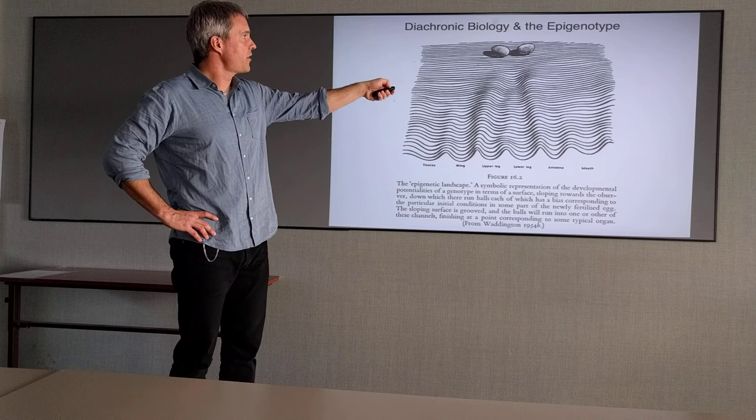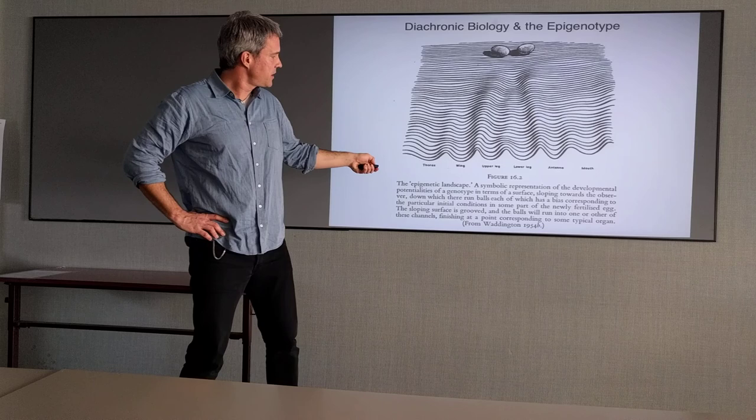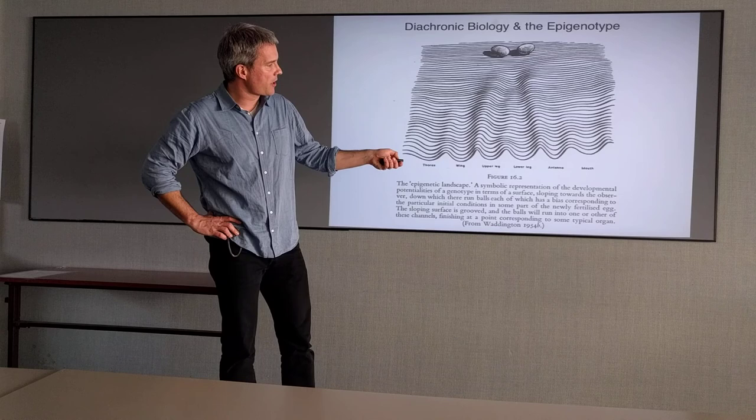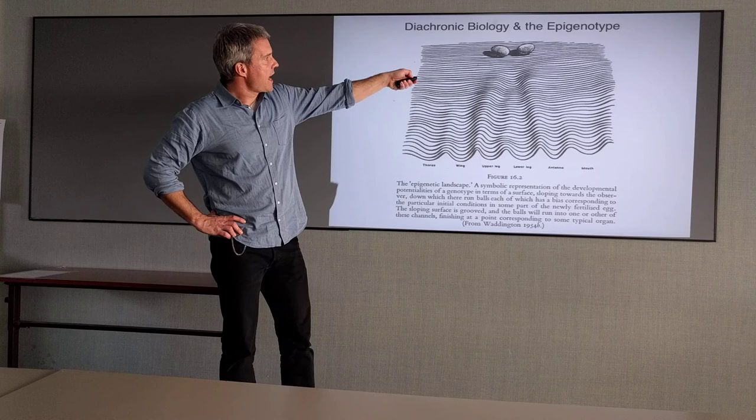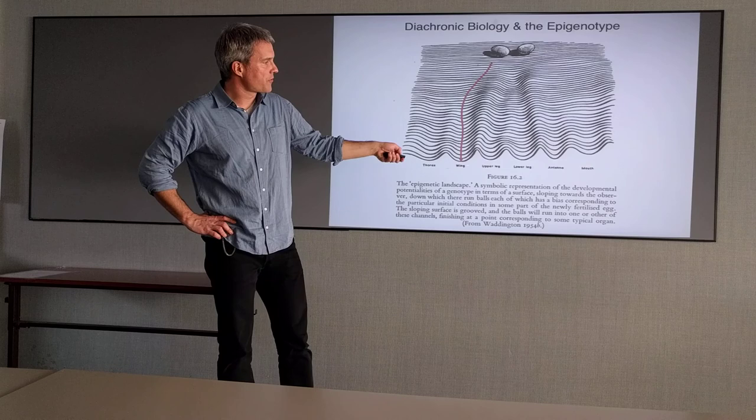You have an egg here, an undifferentiated egg, and you have several differentiated tissues here - wing, antenna, mouth, legs, wings. This applies to fly development, but it doesn't really matter. The egg develops and falls into one of these valleys and forms one of these tissues.